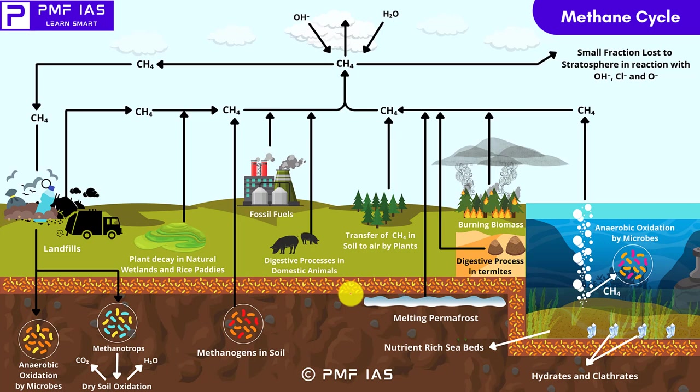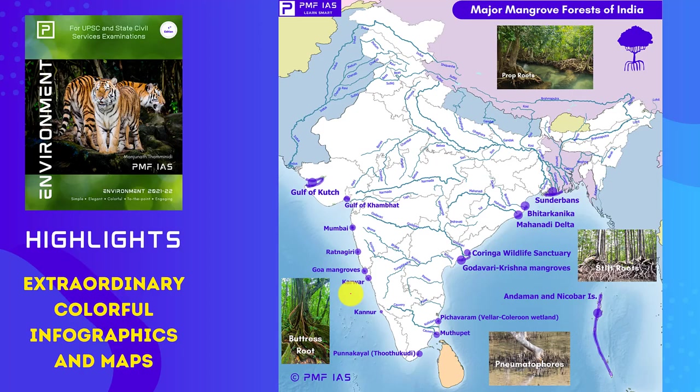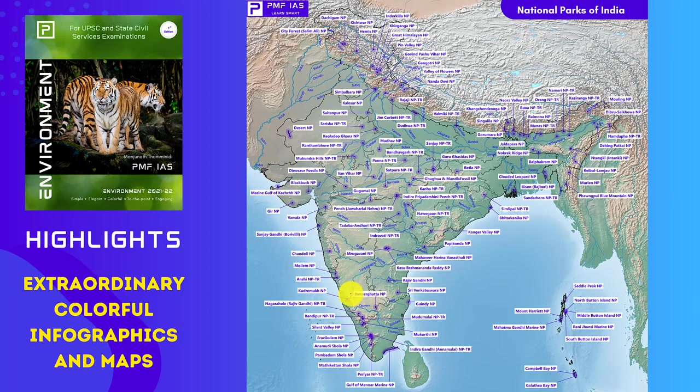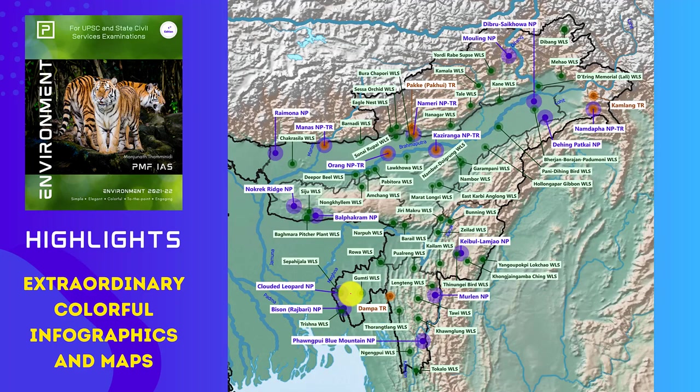This book is definitely a great value for money. We have also included a lot of maps — maps of national parks, tiger reserves, and various wildlife sanctuaries in India. You can see a map that consists of all the protected area networks like national parks, wildlife sanctuaries, and tiger reserves in the northeast region. By just looking at the map, you can understand in which state a particular location is found.